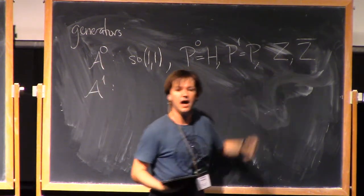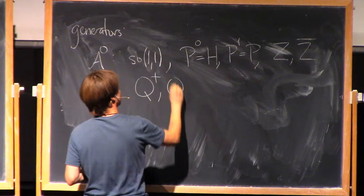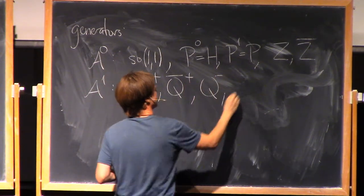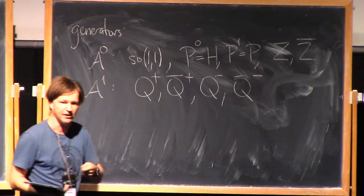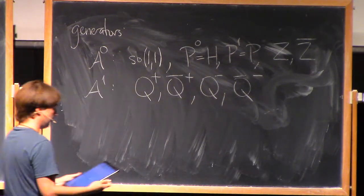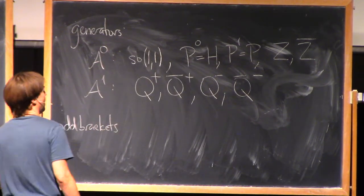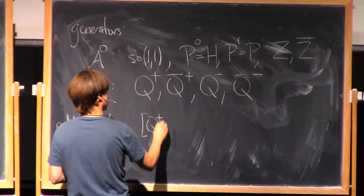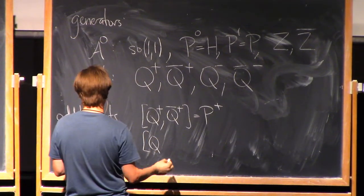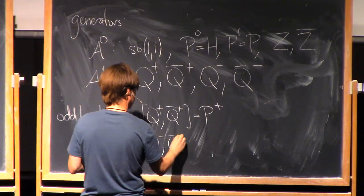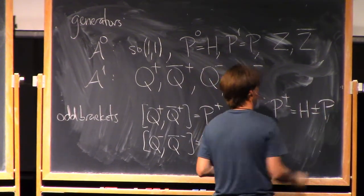We're actually extending even the even part a little bit. In the odd part, we're going to have just four odd generators: Q-plus, Q-bar-plus, Q-minus, and Q-bar-minus. Before, I had just two: Q and Q-bar. In this example we have four Qs. The brackets of the Qs come out like this: Q-plus with Q-bar-plus is P-plus, and P_{±} is H ± P — so they're the light-cone translations.